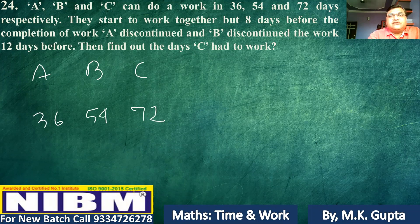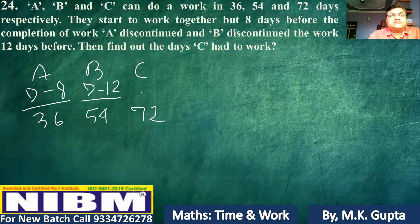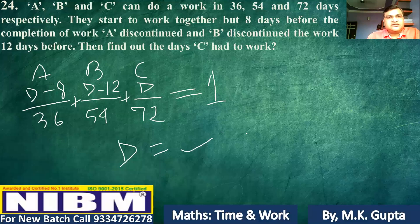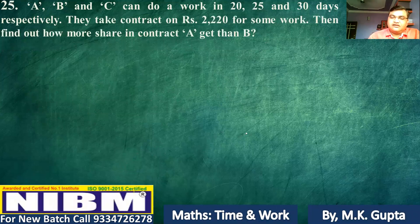They start to work together, but 8 days before completion one person is discontinued. When the work is done with D days, we add the three work components together. We solve for D, and calculate. The answer comes to 24, 25, and so we move to question 25.